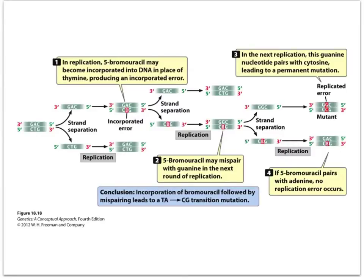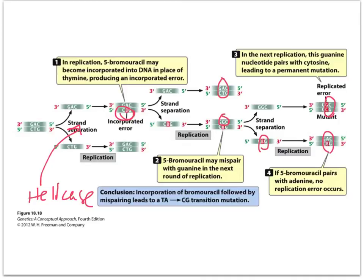Here's an example walking through strand separation during replication — our good friend helicase breaks hydrogen bonds. This mistake will be incorporated into the new strand, causing a mismatch — there's a guanine here, here's the AT. Again, this is a replication error that won't be proofread and will not be fixed, and will subsequently remain as a mutation through every round of replication — a permanent mutation. That's a TA to GC transition, not a transversion.